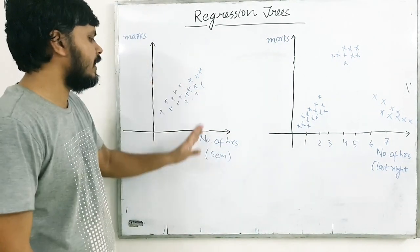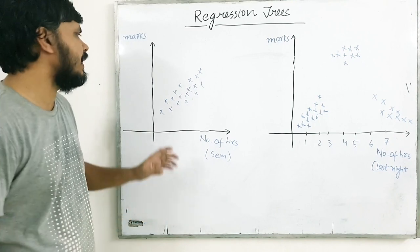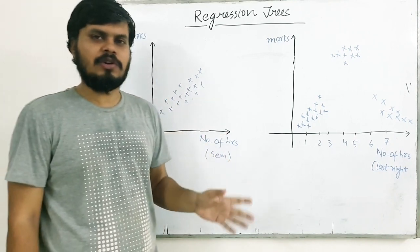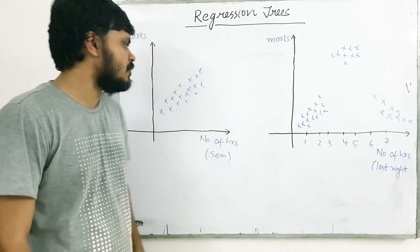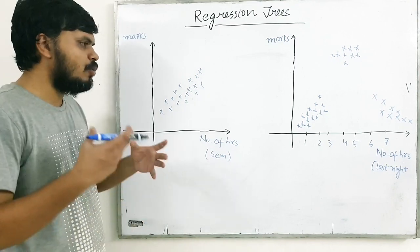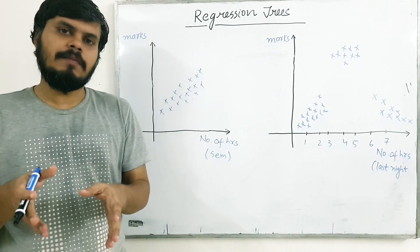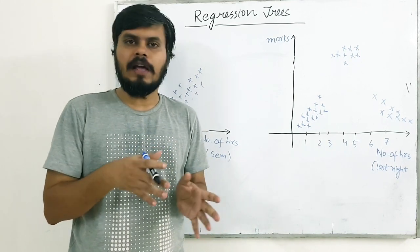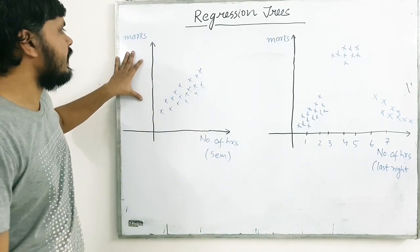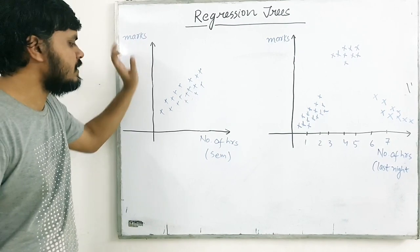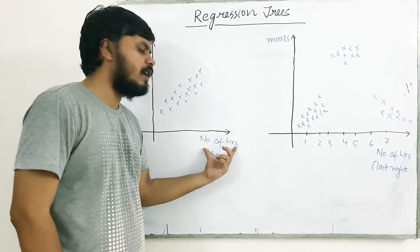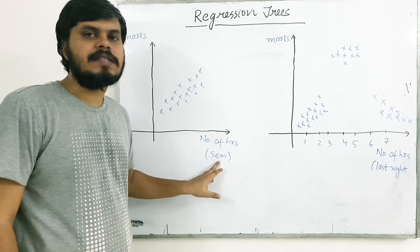So, maine ek data nikala hai, matlab, ek example liya hai, and I think it's a relevant sort of example, specially if you are a student. So, yeh data hai about some students, aur unke marks kitne exam mein, versus unhone kitne ghante padhai kiya, okay? So, yahan pe the first data hai, yahan pe y-axis pe you have got the marks, and on the x-axis you have number of hours of study, in the entire semester, okay?